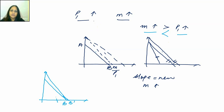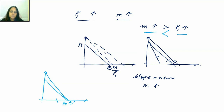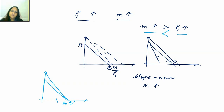So this covers our introduction to budget line. Yeh abhi hamne siraf ar siraf introduction kiya hai budget line ka. In the next video, we will talk about subsidies and rationing, which are also important parts of budget lines. After this video, you should be able to answer: what is a budget line, what is a budget set, what is the budget equation and slope, how to make a budget schedule, and what happens to the budget line when income or prices change — including when two variables change simultaneously. Thank you.